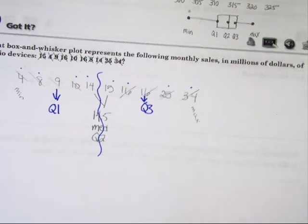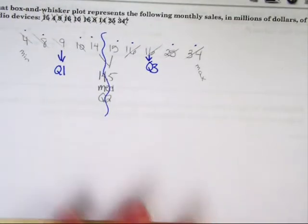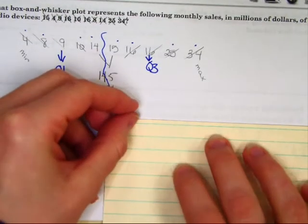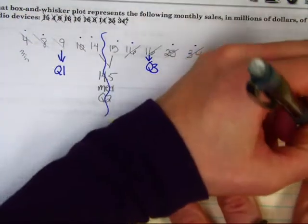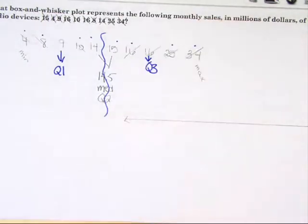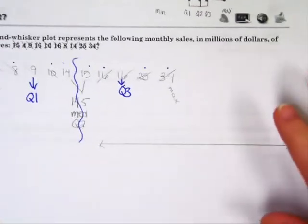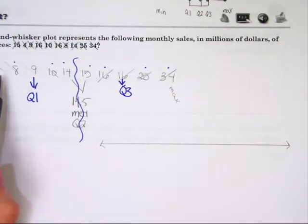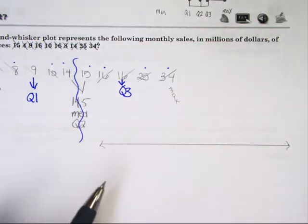Now that we have all of our labels, we're going to make our number line. So draw a nice straight line. Put arrows to indicate that it is a number line. And my minimum is 4, my maximum is 34. So we should go ahead and think about what would be a nice range.